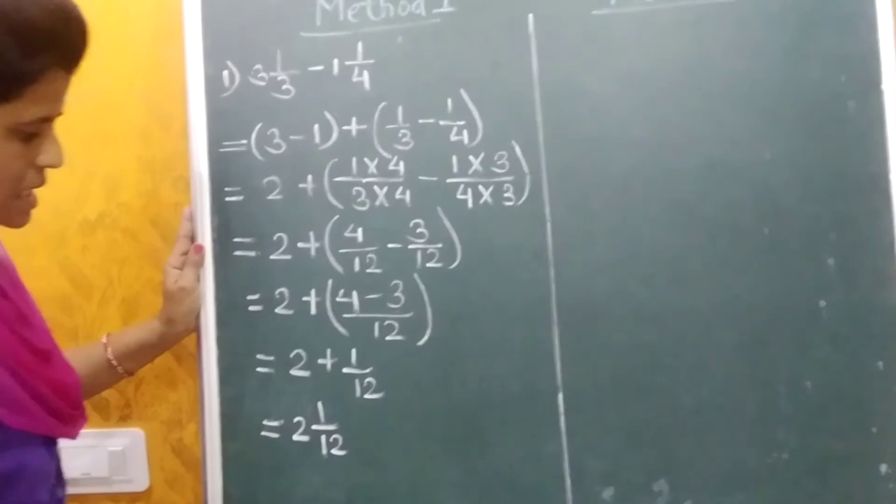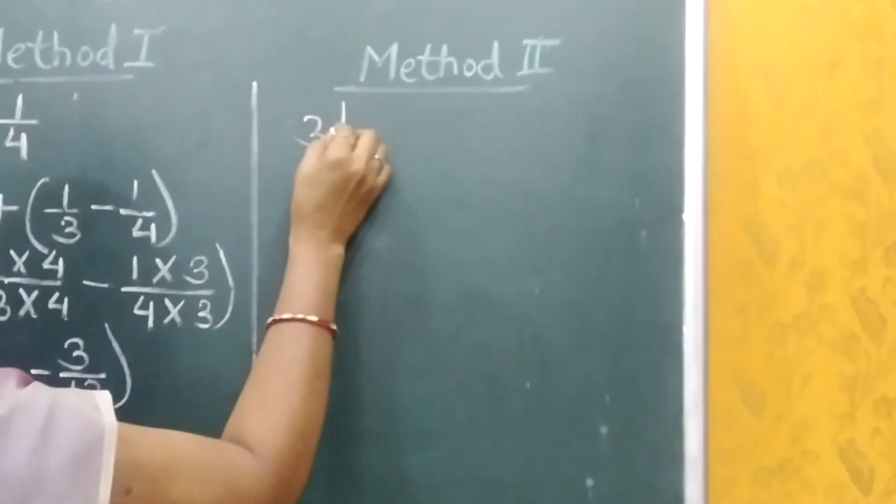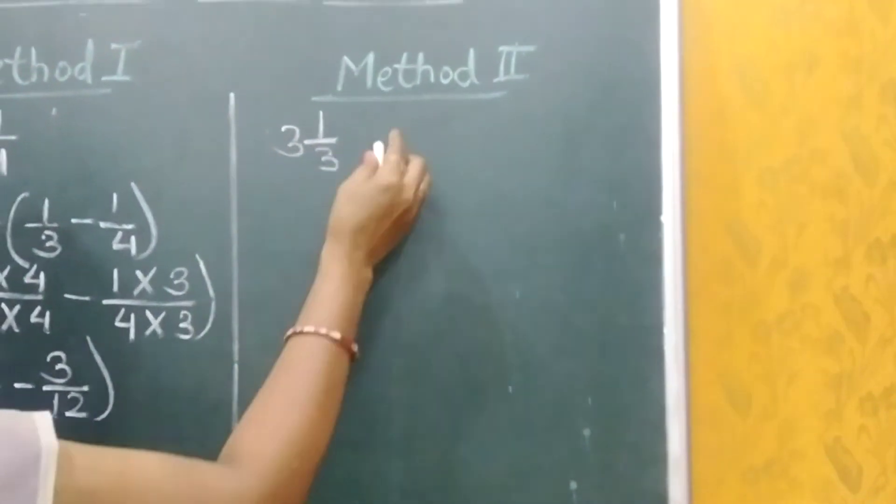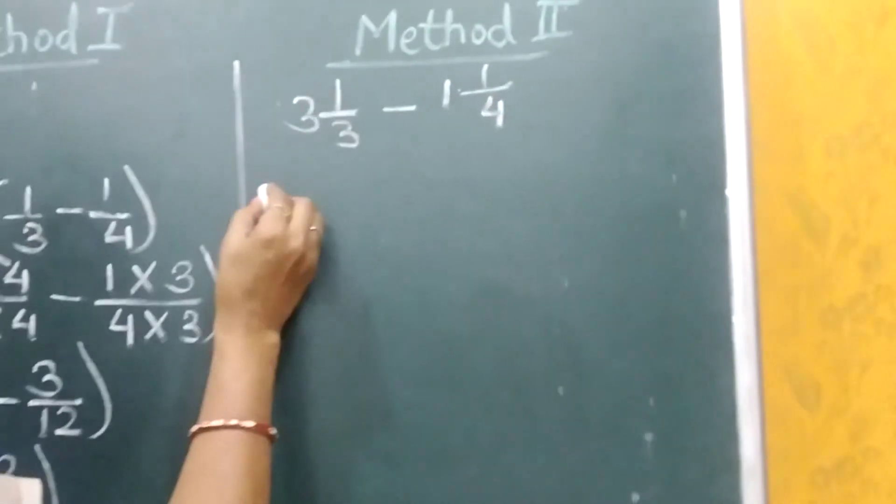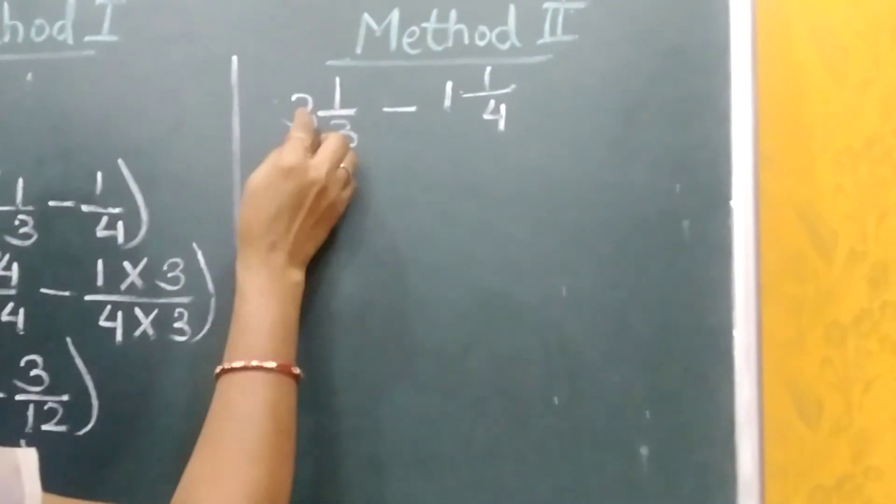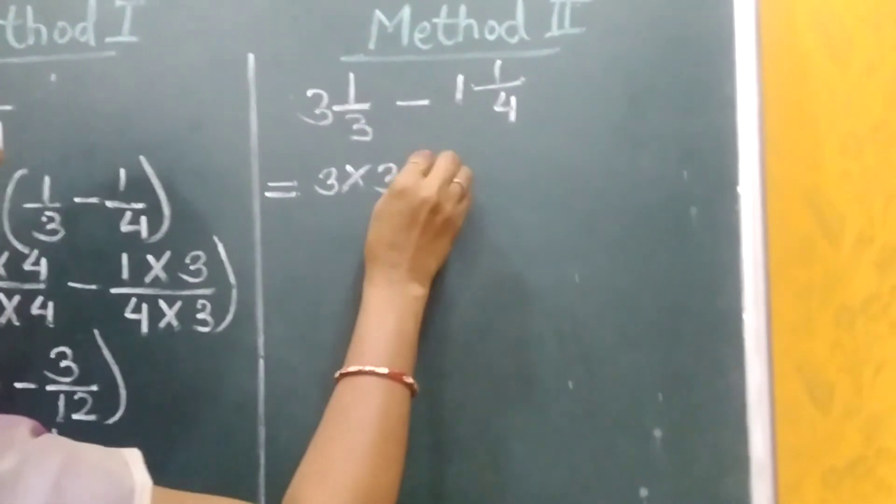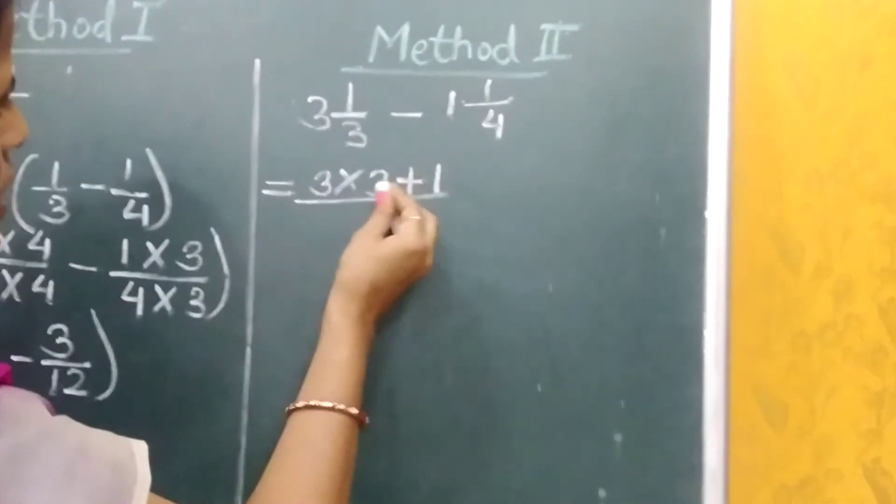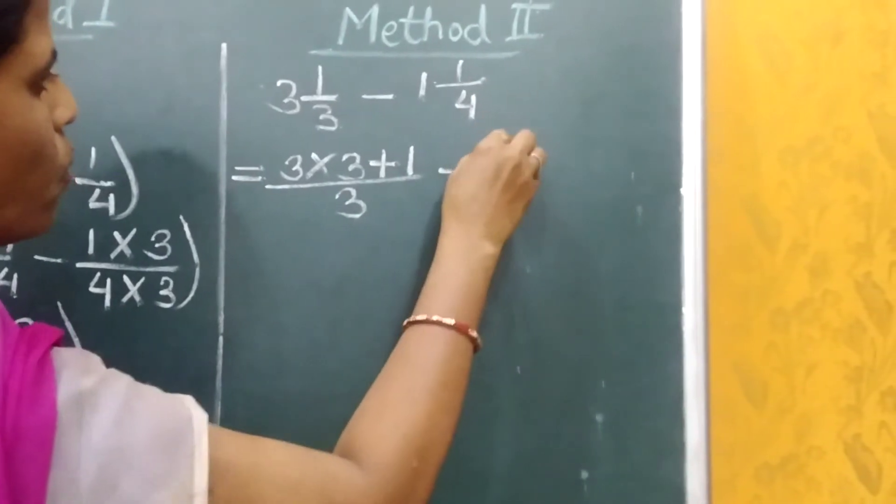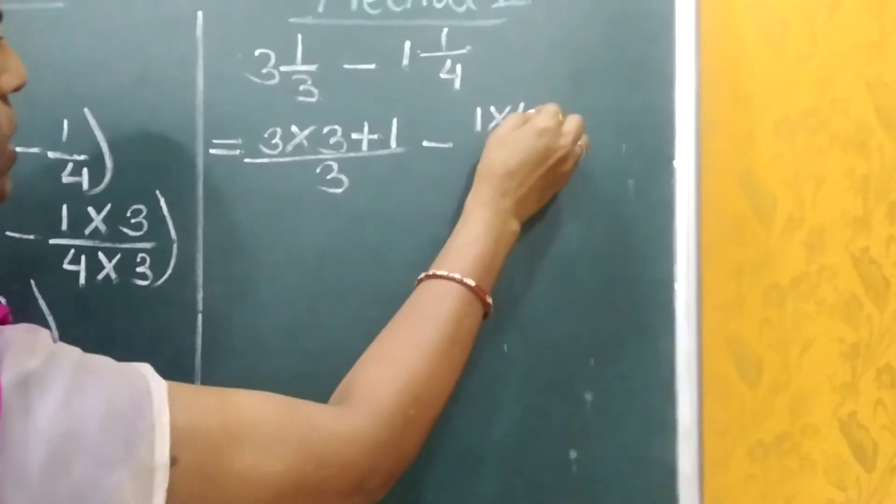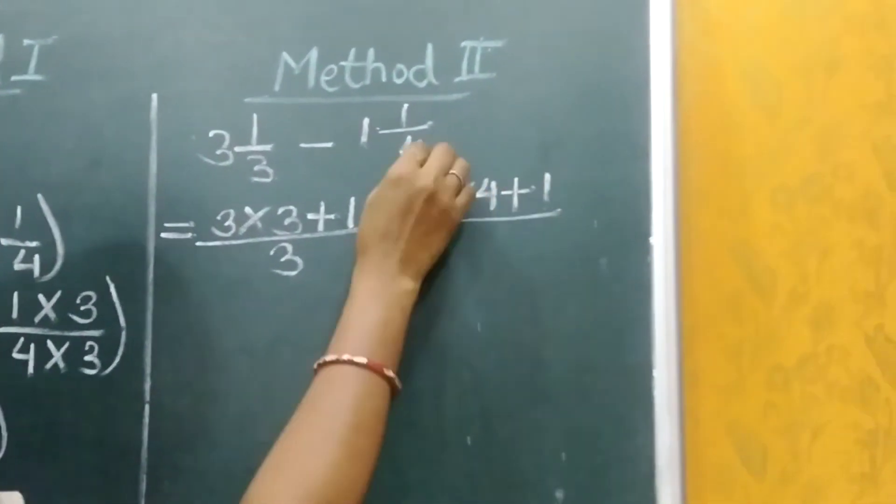And now we will see the second method. So our sum is 3 and 1 upon 3 minus 1 and 1 upon 4. So here what we will do? We will multiply this whole number by the denominator and add the numerator, which is 1 upon 3, minus here 1 multiplied by the denominator 4 plus we will add the numerator 1 upon 4.